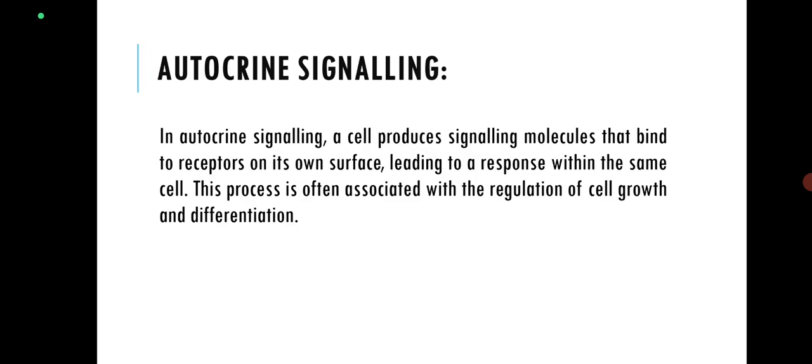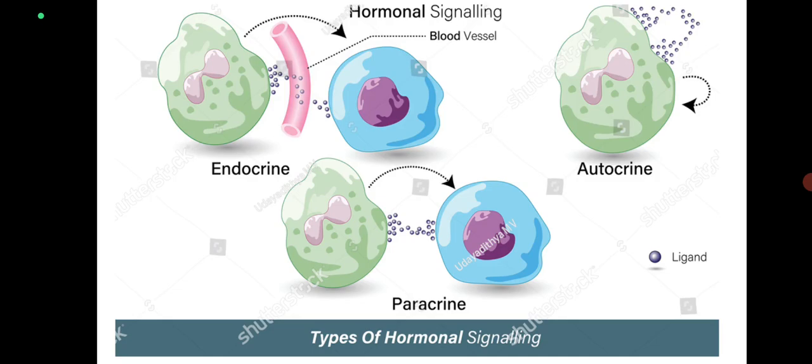In autocrine signaling, a cell produces signaling molecules that bind to receptors on its own surface, leading to a response within the same cell. This process is often associated with regulation of cell growth and differentiation. For example, callus tissue in a plant system slowly differentiates into mature cells — in this case autocrine signaling mechanism is involved. Cell growth in terms of size also relies on autocrine signaling.